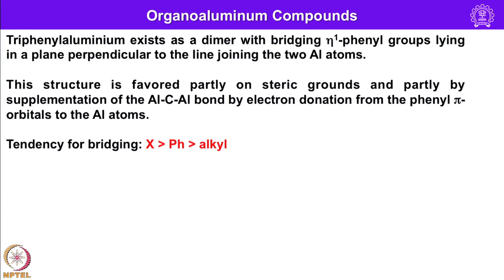Triphenyl aluminum exists as a dimer with bridging eta-1 phenyl groups lying in a plane perpendicular to the line joining the two aluminum atoms. This structure is favored partly on steric grounds and partly by supplementation of the Al–C–Al bond by electron donation from the phenyl pi orbitals to the aluminum atom. The tendency for bridging follows the sequence: AlCl3 > AlPh3 > AlMe3 or AlEt3 — more tendency for bridging in the case of halides, next phenyl, and least for alkyl groups.